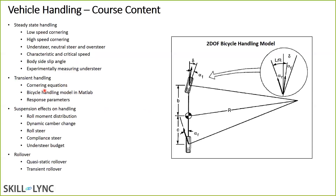The understeer budget is a total understeer contribution coming from different components — how to control each component and consequently change the understeer budget. We'll also cover rollover: static or steady-state rollover, transient rollover, and how to minimize rollover.